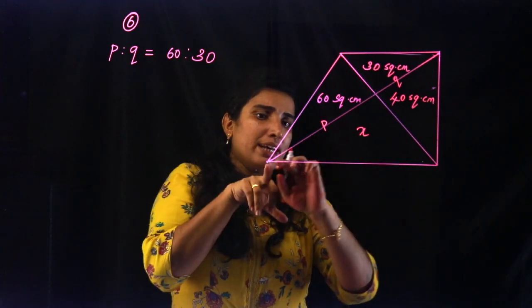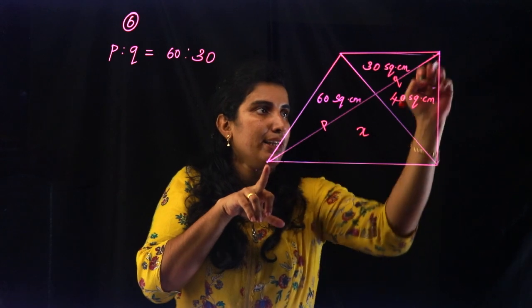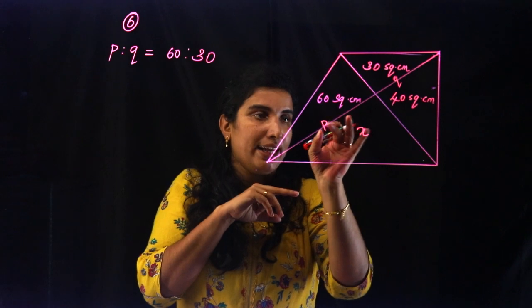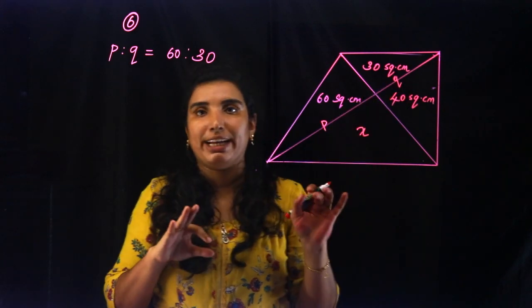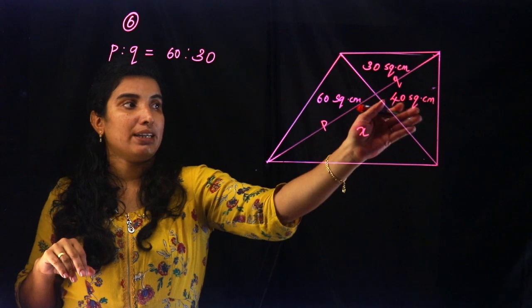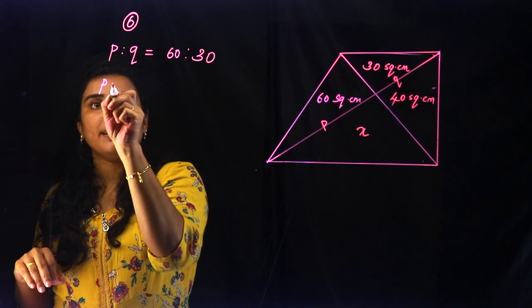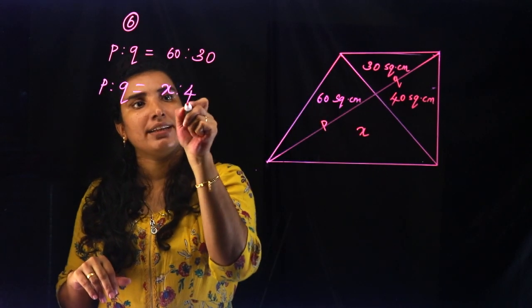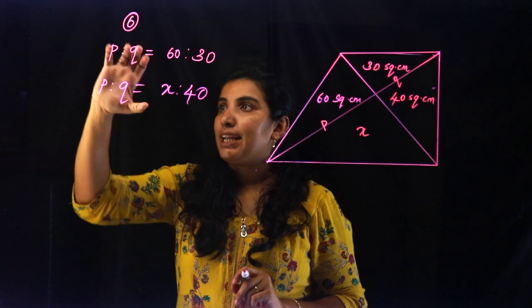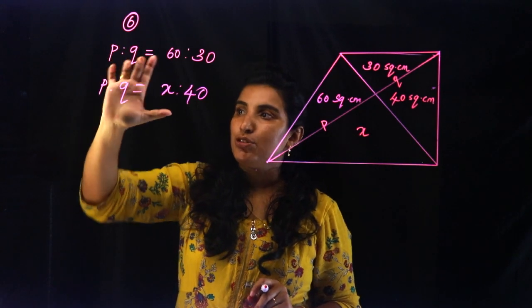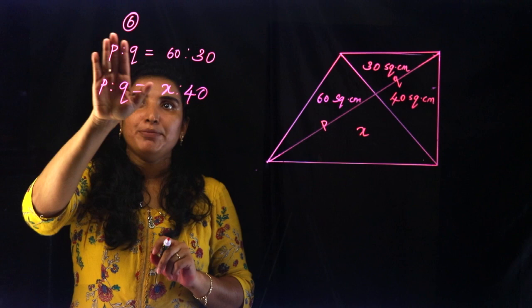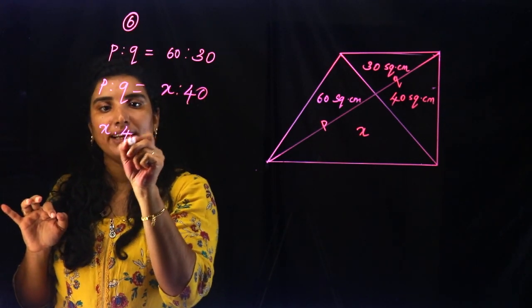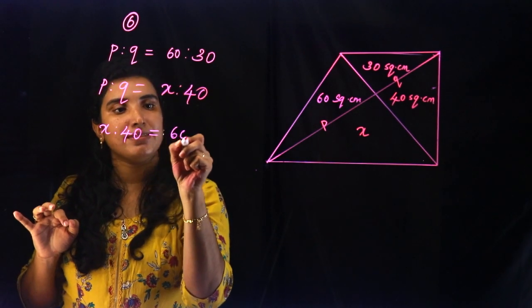Then P is to Q is equal to 60 is to 13. So we have this triangle also. This is why we have 40 and we have X. In this triangle we have P is to Q is equal to X is to 40. The left side is equal to P is to Q, so we have these two the same.